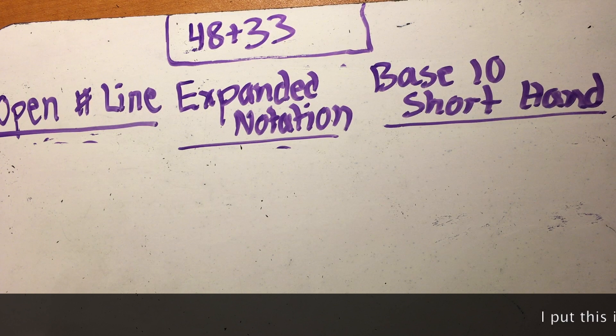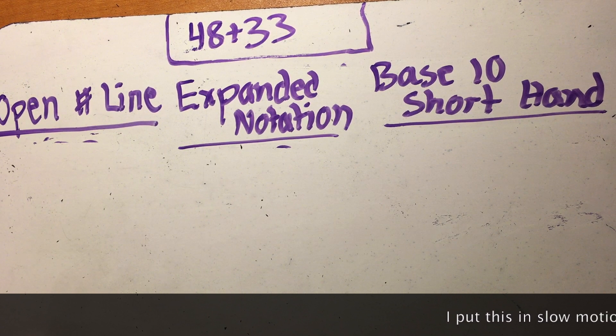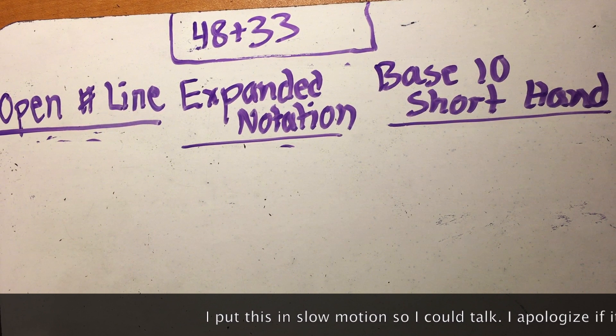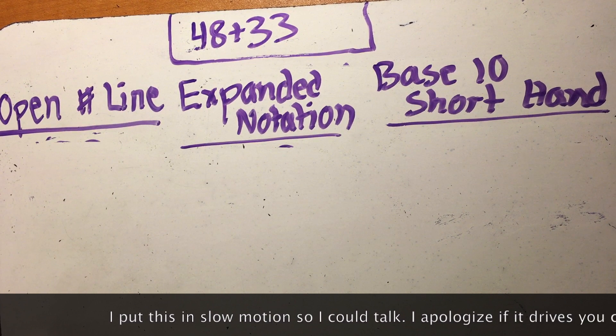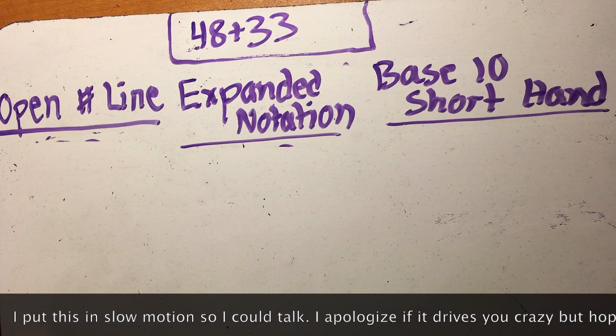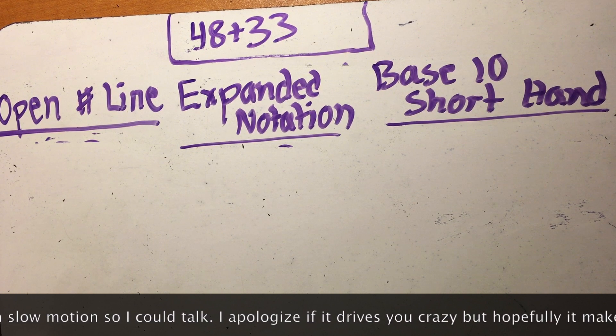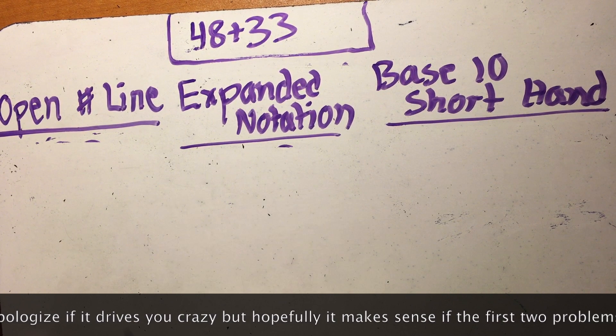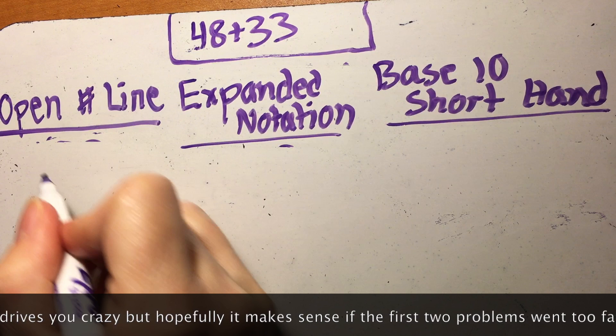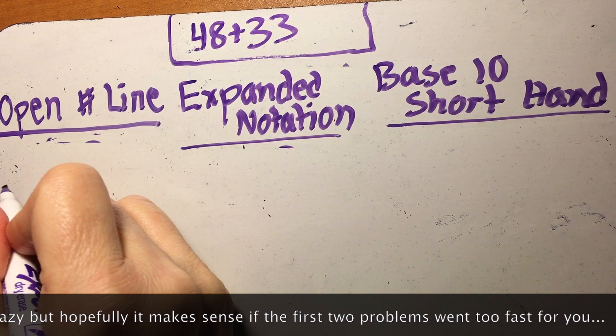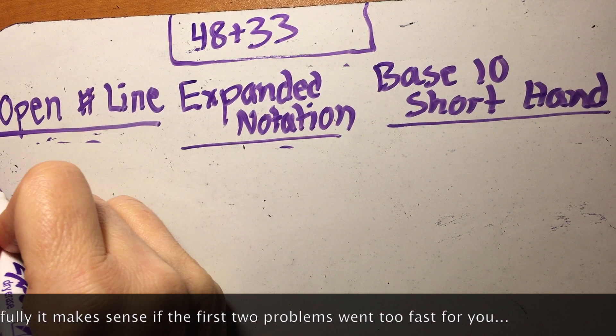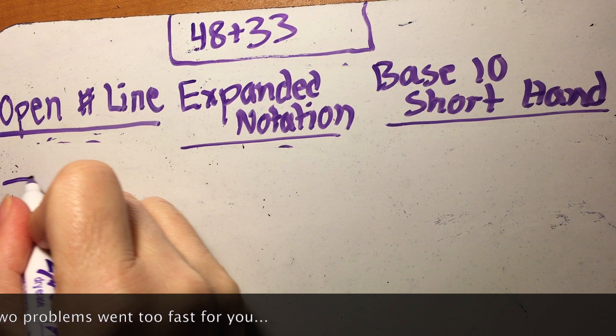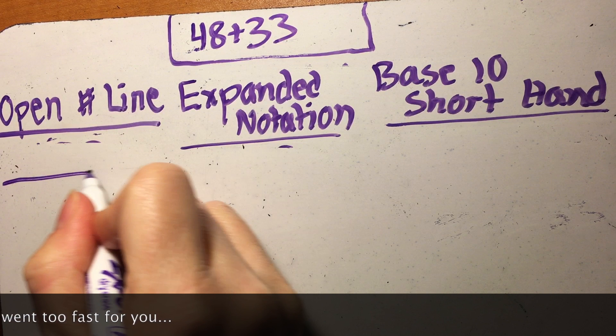Alright parents. So what I'm going to try and do here is I'm going to give you three two-digit addition problems and I'm going to show you how to do them with an open number line, expanded notation, which again is the partial sums but your children called it expanded notation and I will explain later why, and base ten shorthand. So we're going to start at the open number line. I had to slow my hand down because I did this pretty quickly.